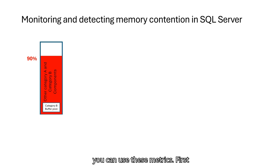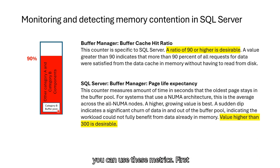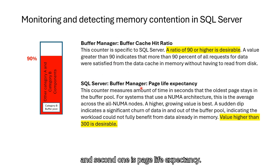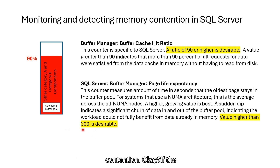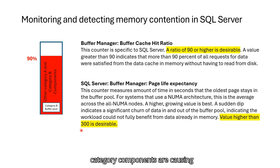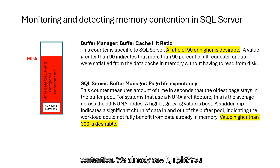For this, you can use these metrics: first, buffer cache hit ratio, and second, page life expectancy. If the values are higher than the threshold values, you can conclude your server is not experiencing memory contention. If the values are low, you should check which category 1 and category 2 components are causing excessive memory and causing the contention — we already saw how to do that.